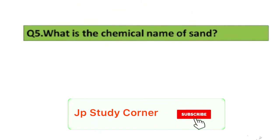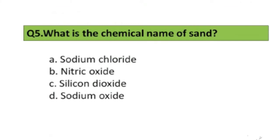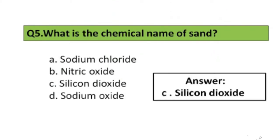Question number 5. What is the chemical name of sand? Options: A. Sodium Chlorate, B. Nitric Oxide, C. Silicon Dioxide, D. Sodium Oxide. The right answer is option C, Silicon Dioxide.